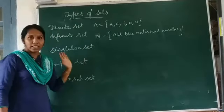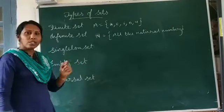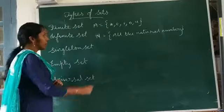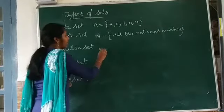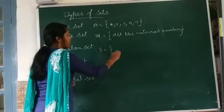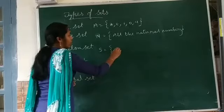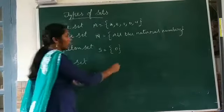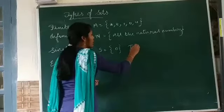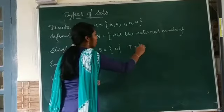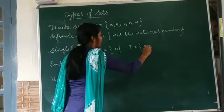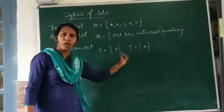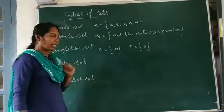Next one is singleton set. If a set contains only one element, that set is known as a singleton set. For example, S is equal to the set {0}. It is a singleton set. We can also say that T is equal to the set {A}. Both of these are examples of a singleton set.